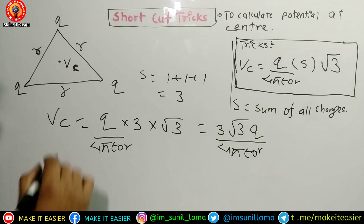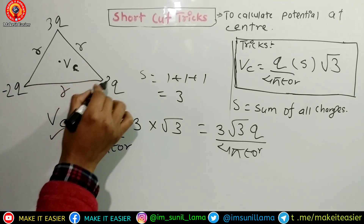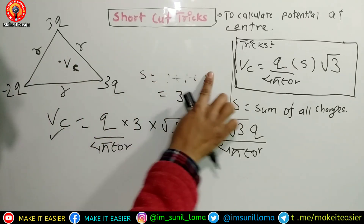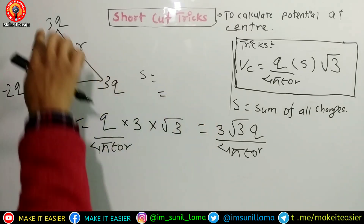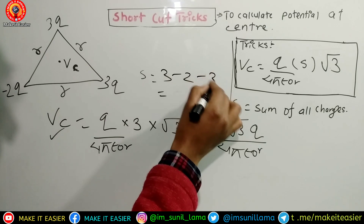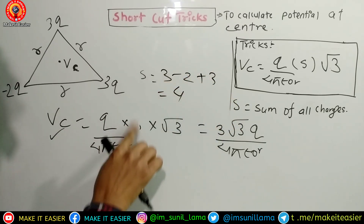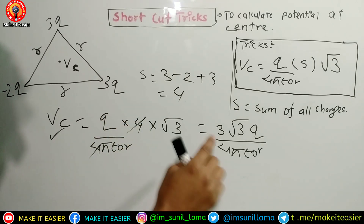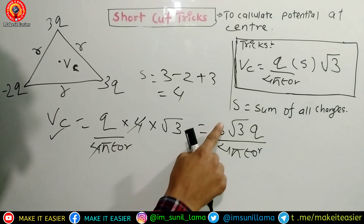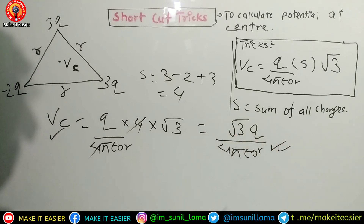Now suppose we have mixed charges: three q positive and two q negative — minus two and minus two. We need to find s. Using the trick: three s minus two s gives one s; or putting values, three plus three equals six, six minus two equals four. Four divided by root three, and root three·q/(4πε₀r) is the correct answer.